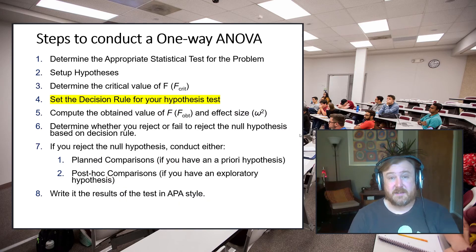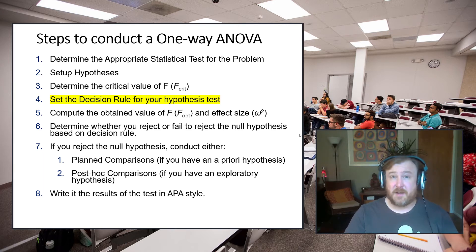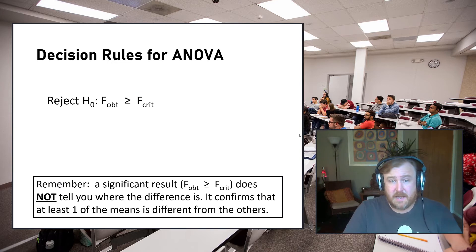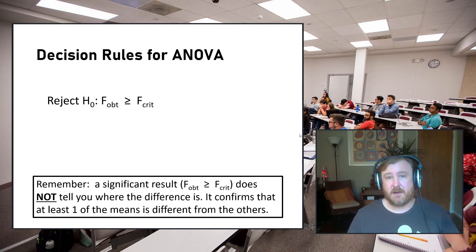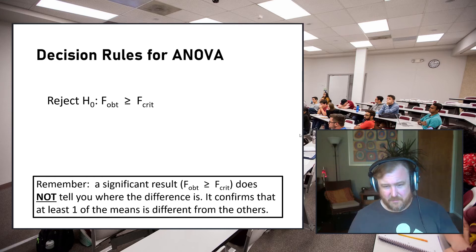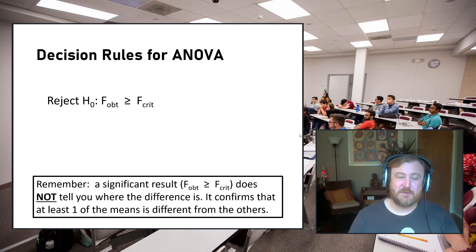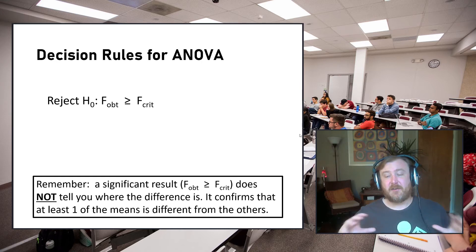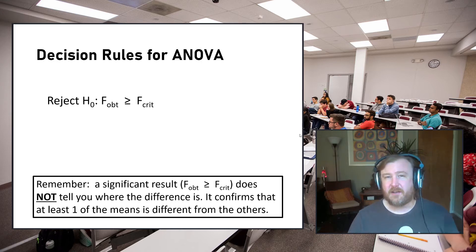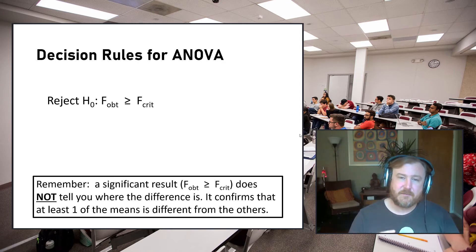The next step is setting up the decision rule for our hypothesis test. Because there's no directionality, the decision rule is always: reject the null if F-obtained is greater than or equal to F-critical. A significant F value does not tell you where the difference between means is — it tells you something is going on, that at least one mean is significantly different from one other mean.